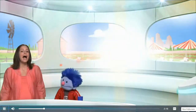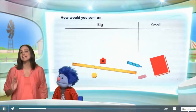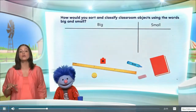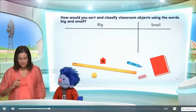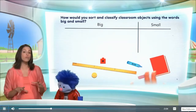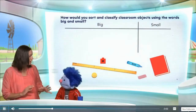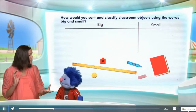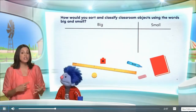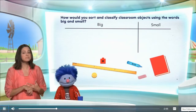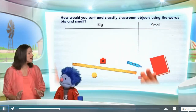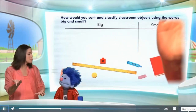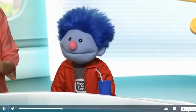Why don't we try a math puzzle together? That'll be fun! How would you sort and classify classroom objects using the words big and small? Let's look at our objects. Before we classify them, I just want to let you know, Joey, we can classify them in terms of color, shapes, or size. And that's what we want to do today — we want to classify them in terms of size, because big and small has to do with size.